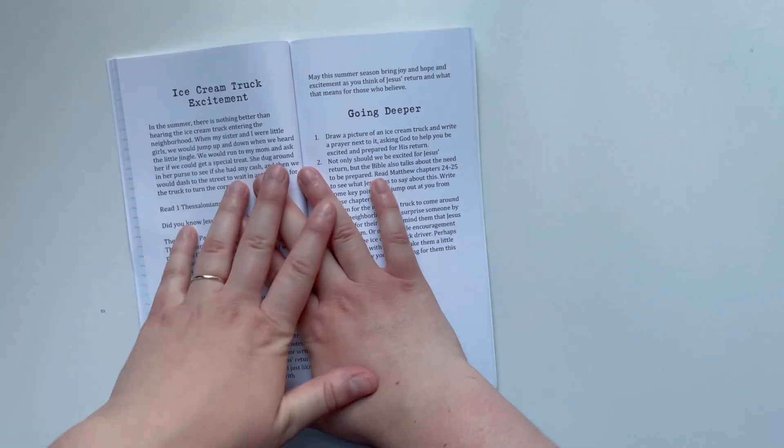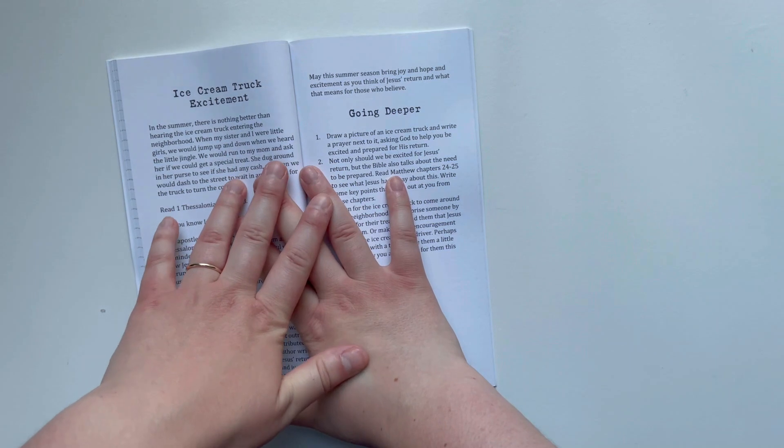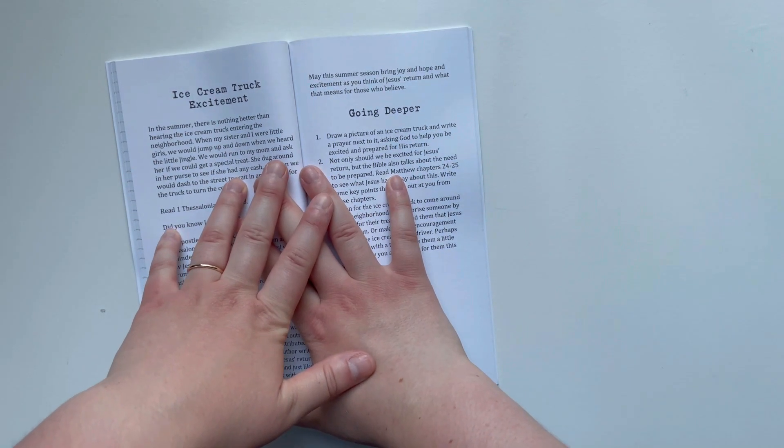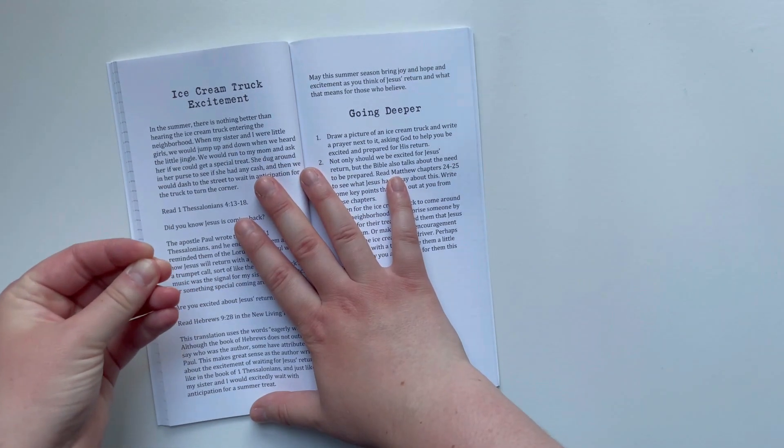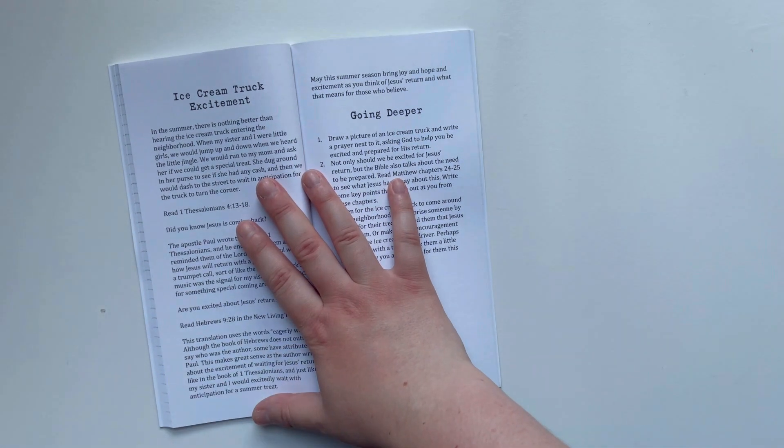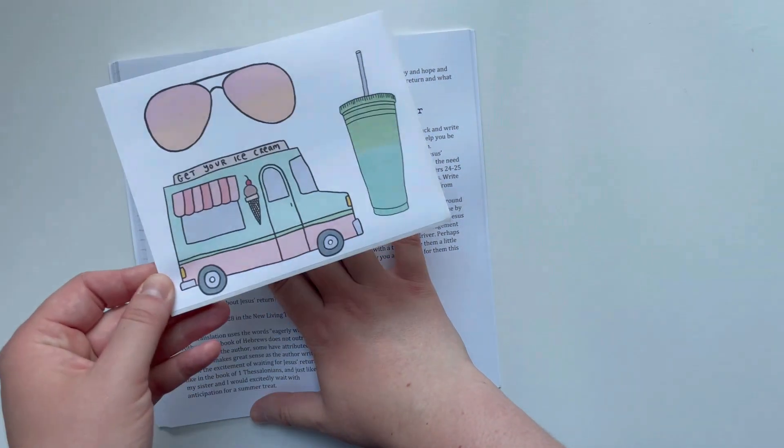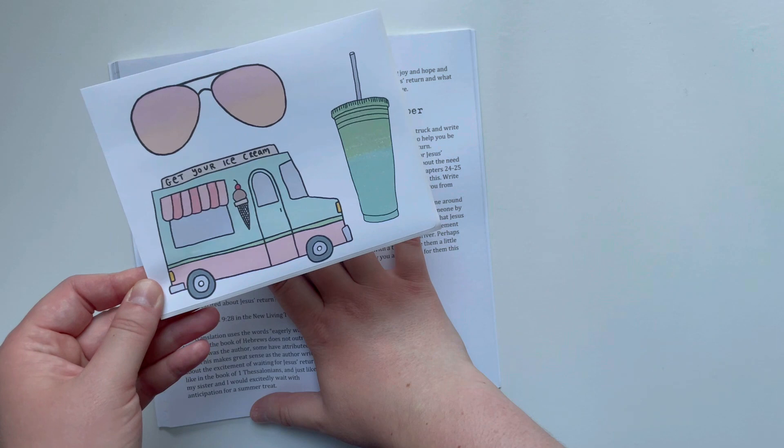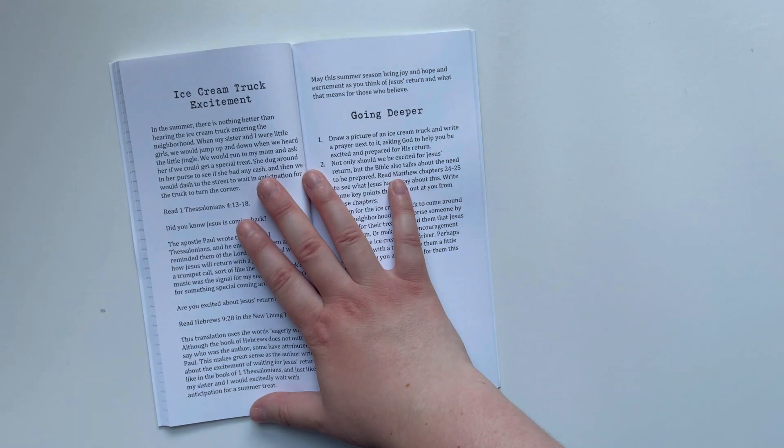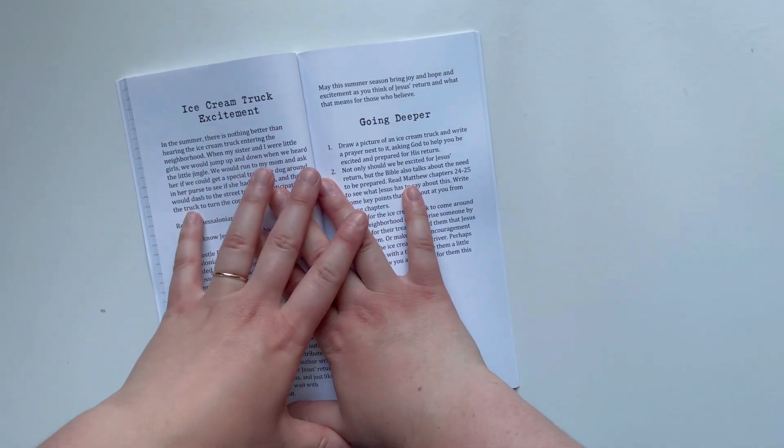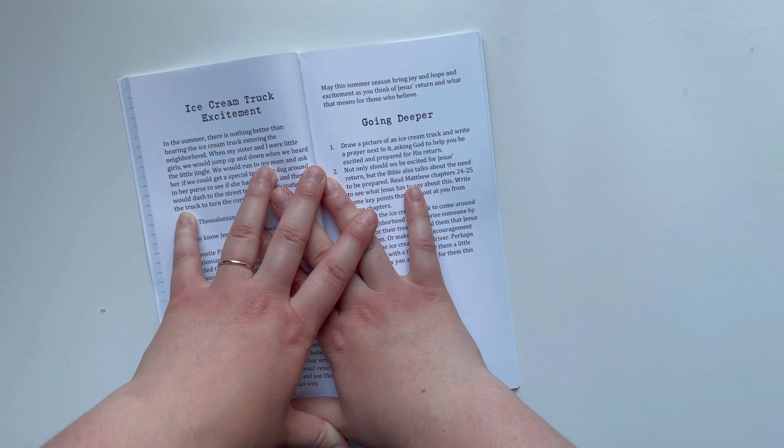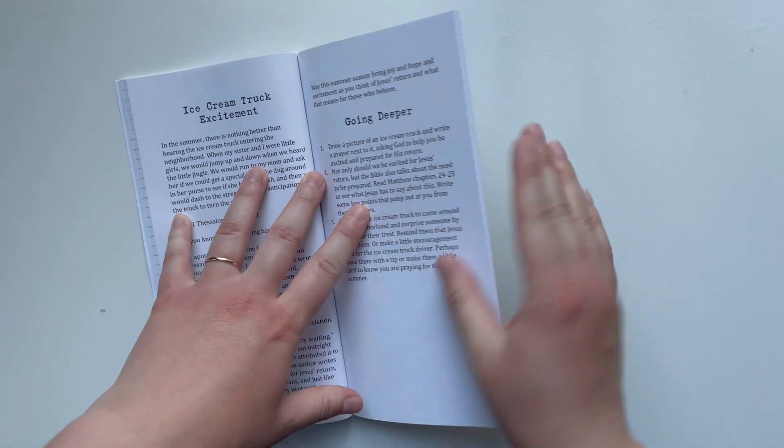Then we have Ice Cream Truck Excitement. This is a really funny one because I connect the ice cream truck coming with Jesus's return. And again in the coordinating printable, there's this very cute ice cream truck that I drew—I love how that turned out. This is a really important theme for us to think about and be praying about and be preparing for, the return of the Lord.